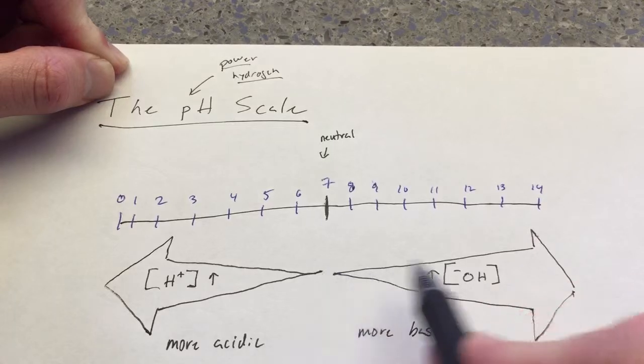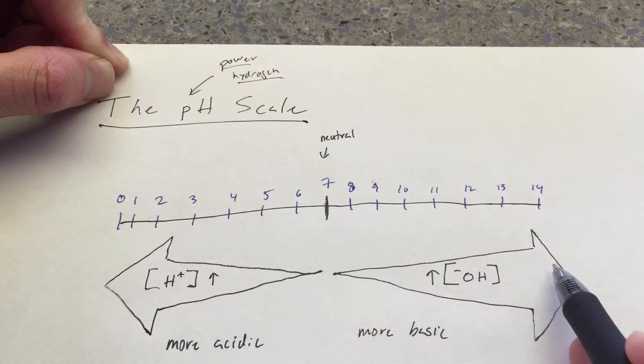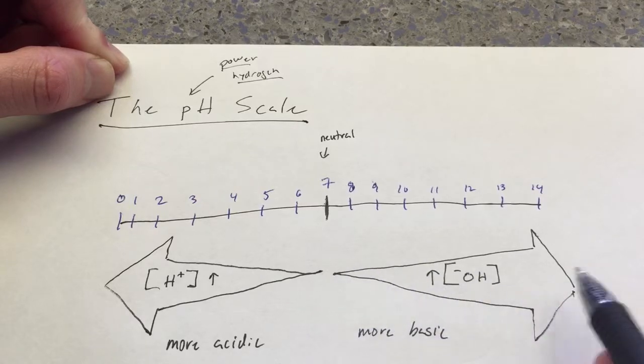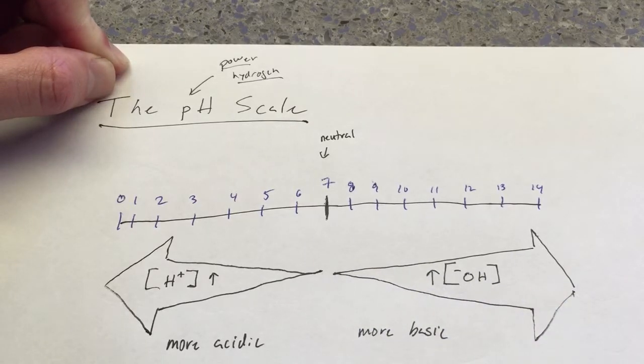So something is more basic the more hydroxide ions it has. So from 7 out towards 14, this indicates an increasing amount of hydroxide ions.